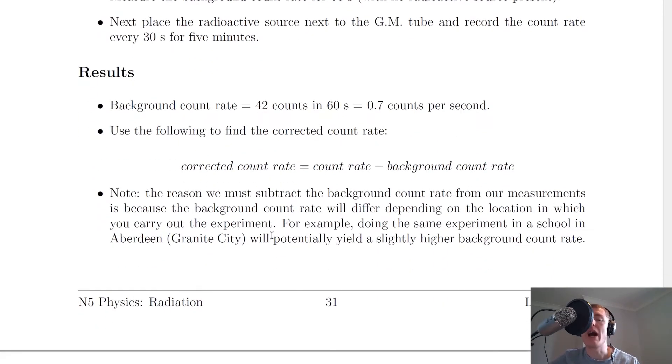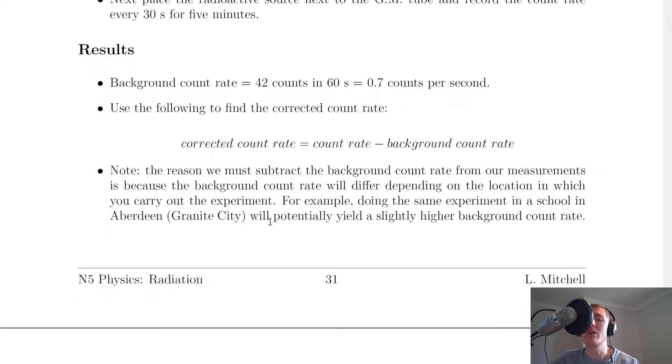The next section is the results section and let's say you've measured a background count rate of 42 counts in 60 seconds. So what we would need to do is get a value from that in counts per second. And this is just the same as becquerels, our measure of activity. So in this specific example I measured 42 counts of background radiation in the 60 seconds. So if you want a value in counts per second we just divide 42 by 60 and we get a value of about 0.7 counts per second.